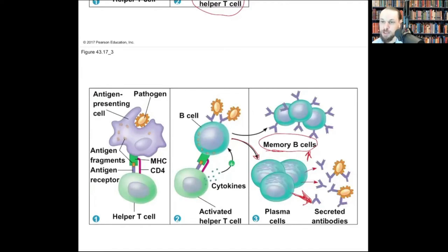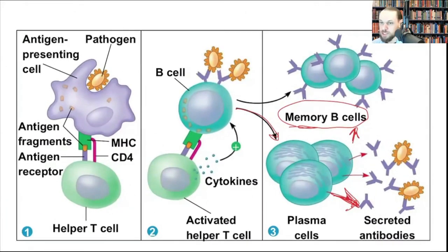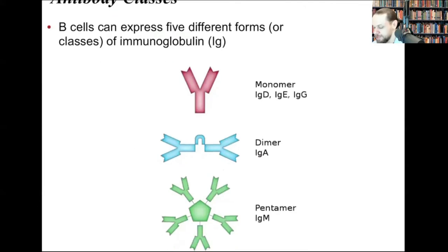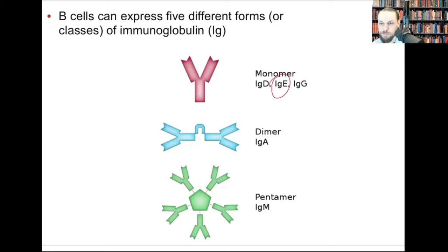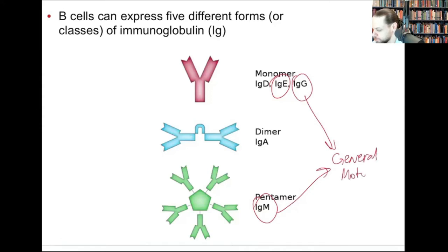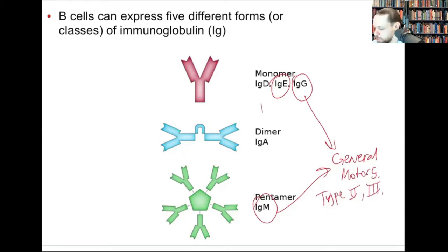If Ian goes to that garden a third time with the same pollen, he already has memory B cells — his response will be far more exaggerated than his second exposure. That's why subsequent exposures to an allergen like bee stings or peanuts are way stronger. The antibody classes: IgE is for type 1 hypersensitivity reaction; IgM and IgG — a good way to remember is 'General Motors' — are found in type 2 and type 3 hypersensitivity reactions.